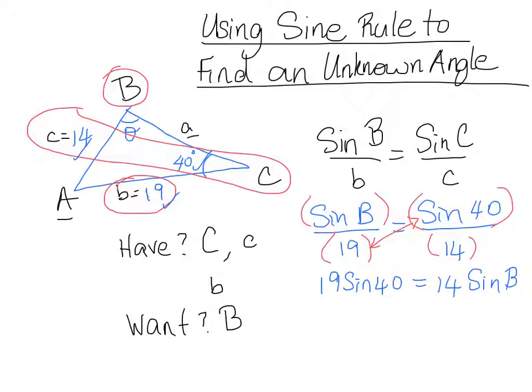Ultimately, we're trying to isolate the B, but before we can isolate the B, we need to isolate the sine B. So, we can divide both sides by 14, and we'll get that sine B is equal to—and you plug it into your calculator as I'm about to do as well—19 sine 40 over 14. And that gives us that sine B is equal to 0.8724, approximately.